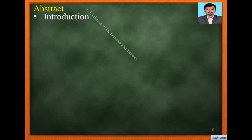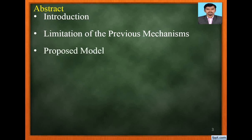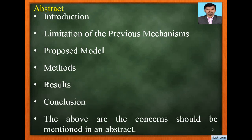It should have a short introduction, limitations of the previous mechanisms, what is the proposed model being proposed in this particular research paper, what are the methods or algorithms used in the research paper, what are the results obtained, and what is the conclusion. These concerns should be mentioned in an abstract.